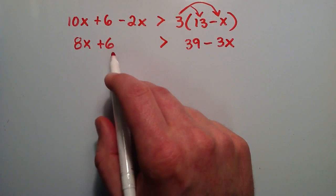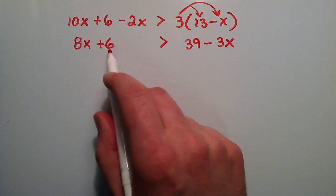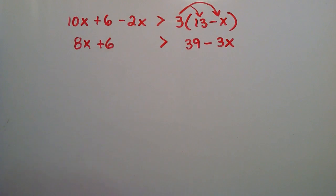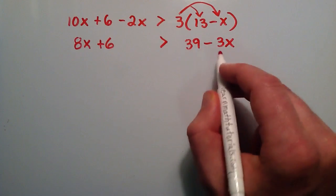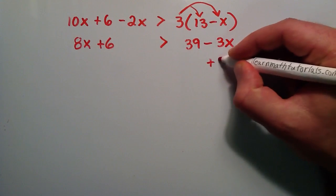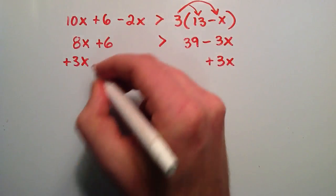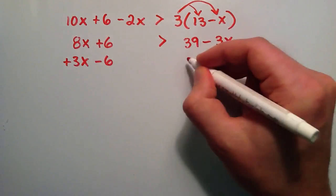And basically what we're going to do is put our constant terms on the right hand side and our variable terms on the left hand side. So we're going to add 3x to both sides. And then we're going to subtract 6 from both sides.